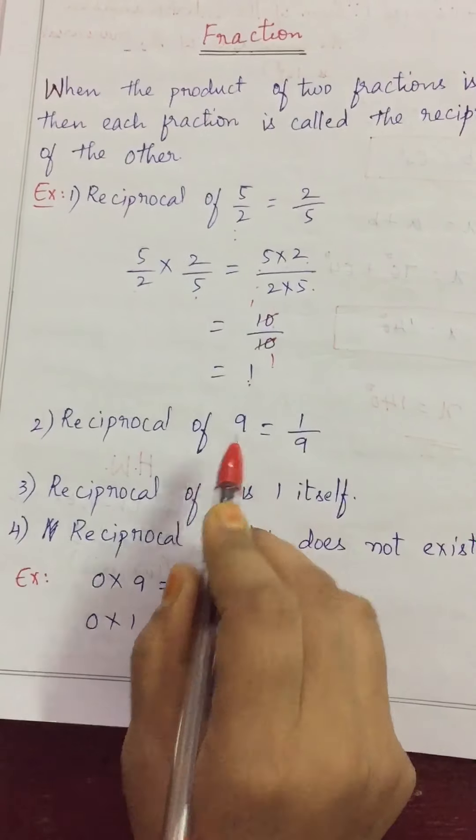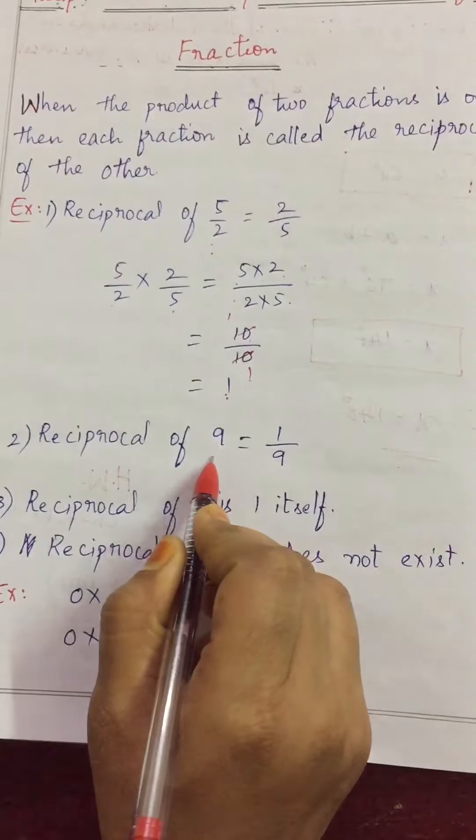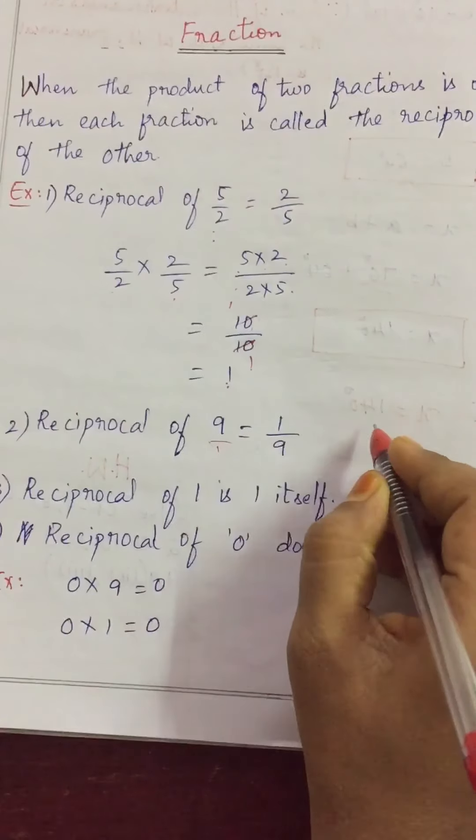See, here one more example. 9 is a fraction. For 9 can we write 9 by 1. So, reciprocal is 1 by 9. See,